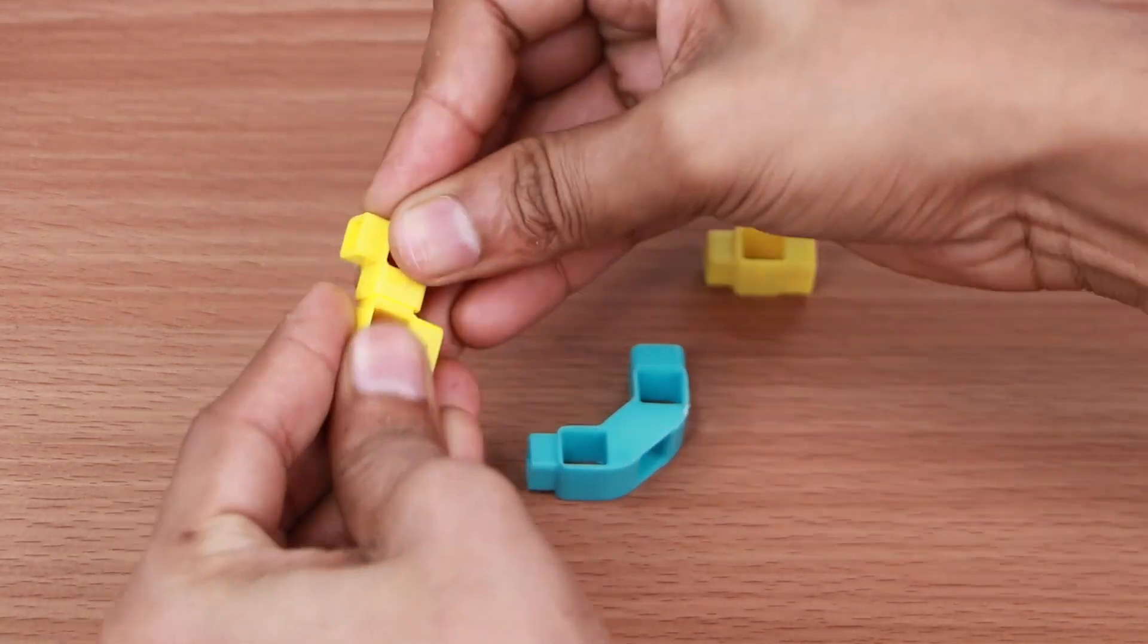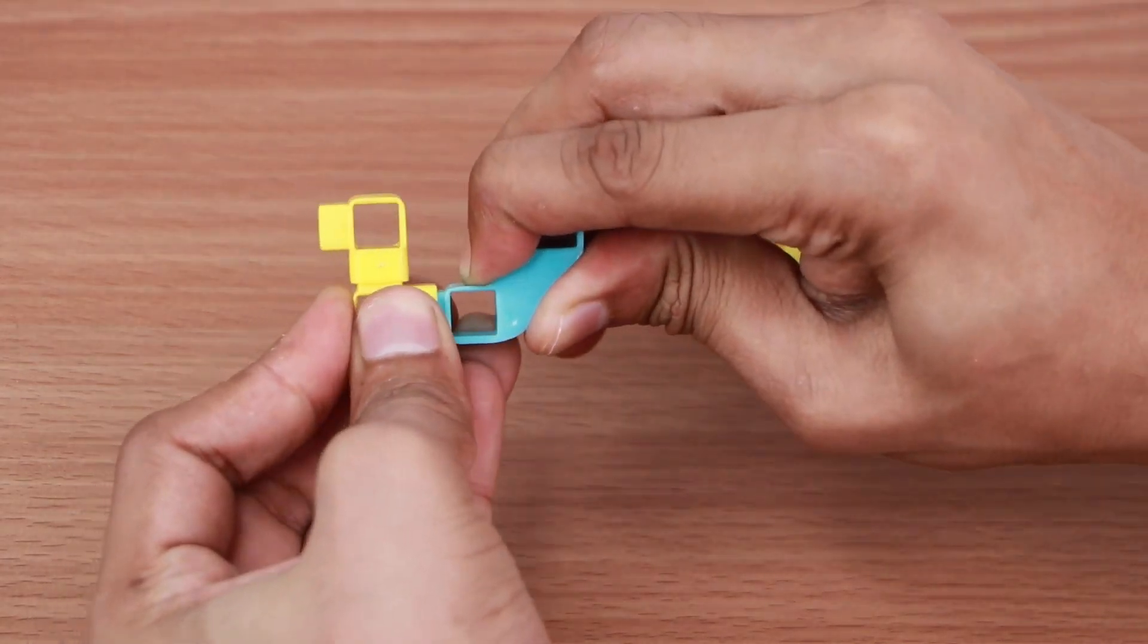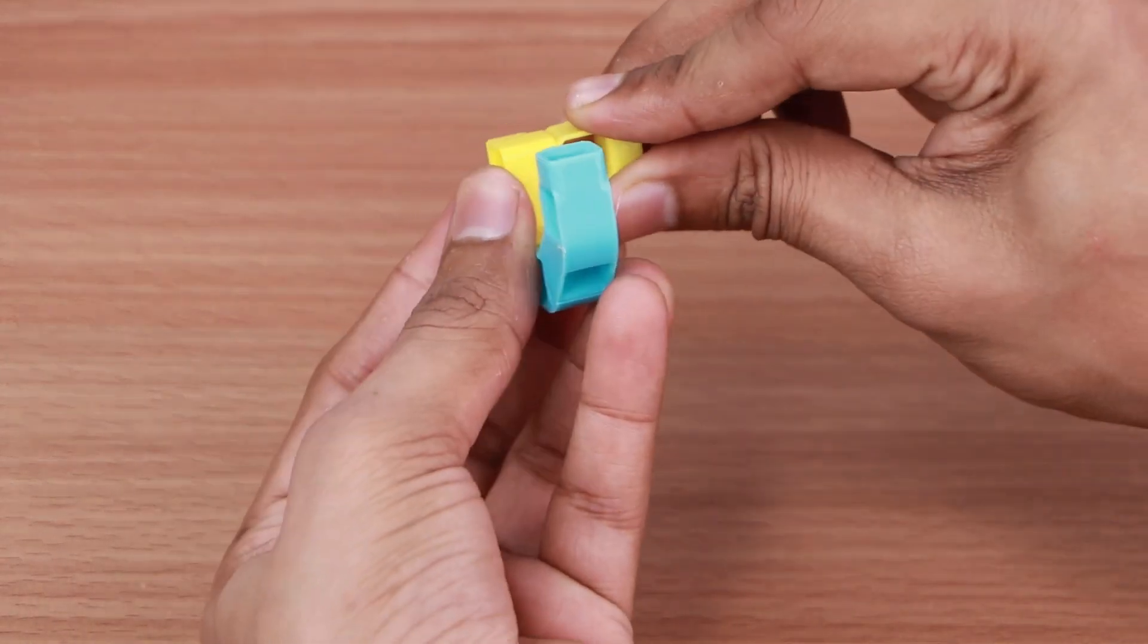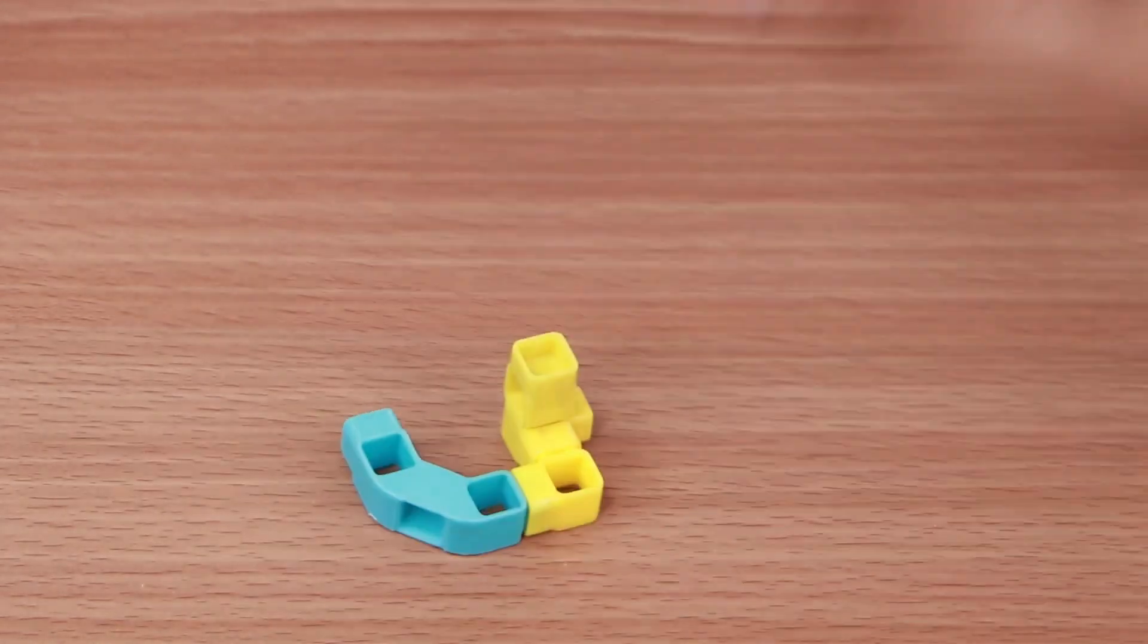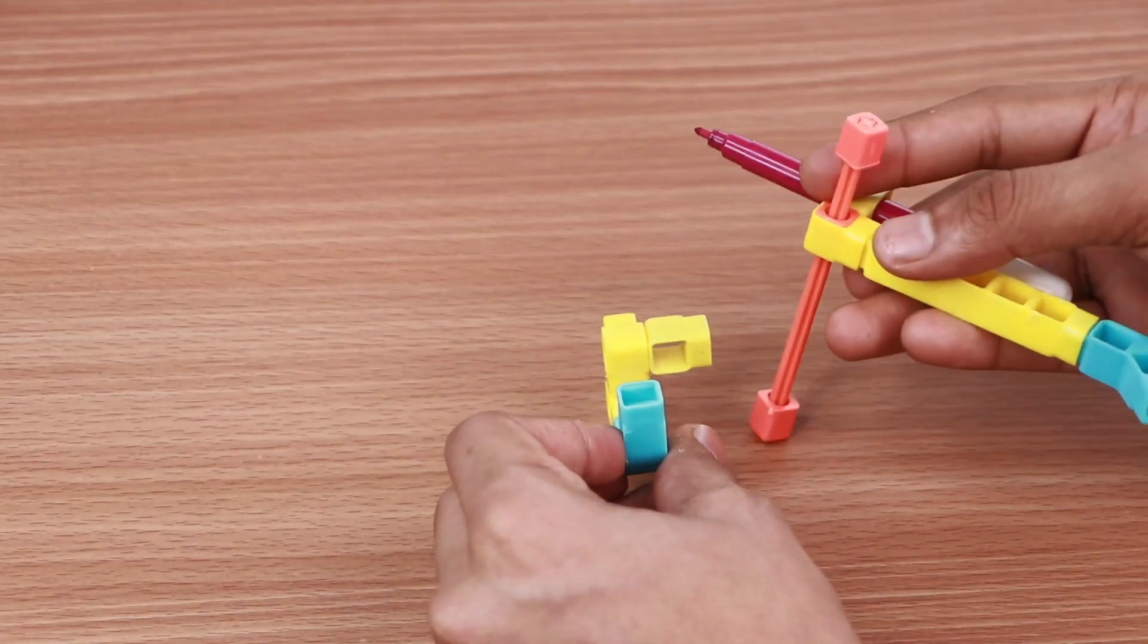Take two one-hole elbows, one one-hole beam and one three-hole elbow and join them. Attach this structure to the pen assembly.